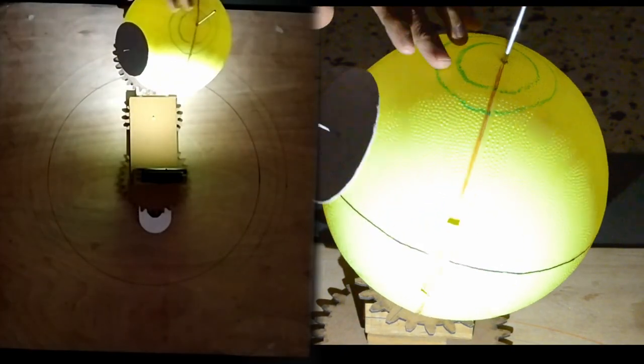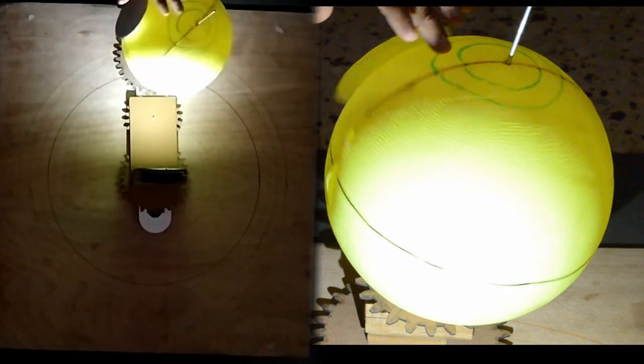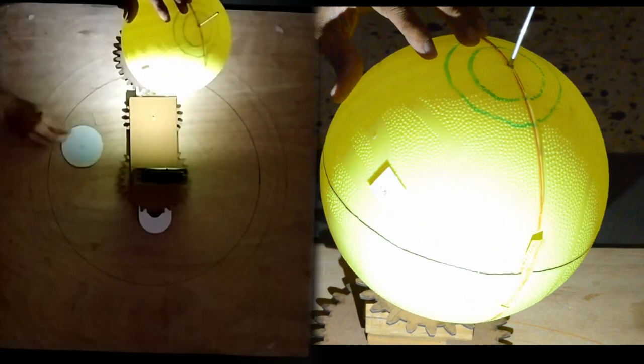You can also use this setup to change the location of the pin on the ball and explore the path the shadow takes.